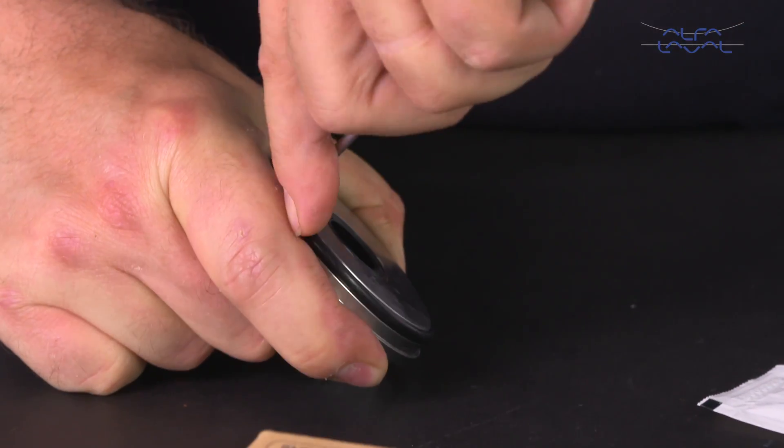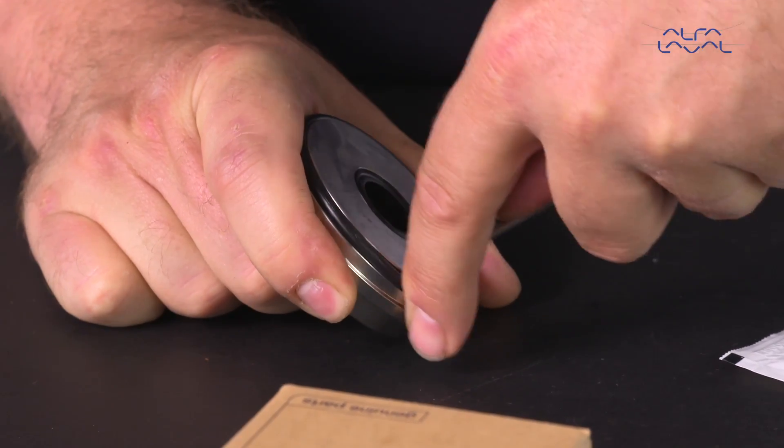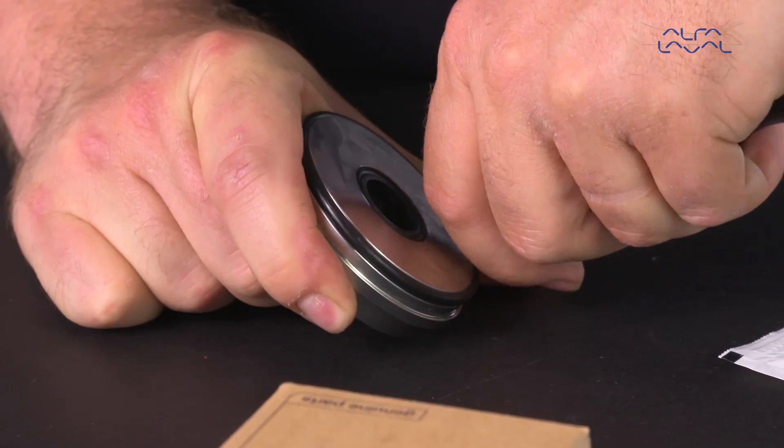Carefully place a small screwdriver on the backside of the o-ring and turn 360 degrees to ensure that the o-ring did not twist or roll.